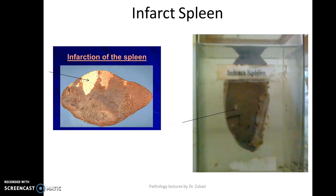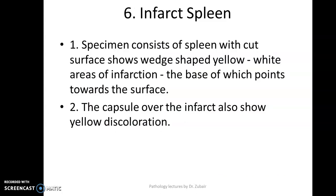The next specimen is of an infarct of the spleen. The classical question all examiners will ask is: what is the shape of the infarct? The shape is wedge-shaped, because the artery branches out — it is an end artery supplying the spleen, and when it branches and infarction occurs, the base is wider than the apex. The examiner can also ask you to classify infarcts: by color — red and white infarct; by presence or absence of infection — septic infarcts and bland infarcts; and by age — fresh infarct and old infarct. The specimen consists of spleen with cut surface showing wedge-shaped yellow-white areas of infarction, the base of which points towards the surface, and the capsule over the infarct also shows yellow discoloration.